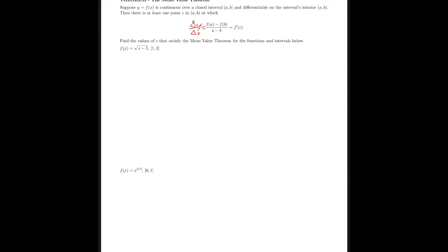The Mean Value Theorem builds on Rolle's Theorem. It states: suppose y = f(x) is continuous over [a, b] and differentiable on (a, b). Then there is at least one point c in (a, b) at which the average rate of change between a and b — that is, Δy/Δx — equals the instantaneous derivative f′(c). So the task is to find the value c that satisfies the Mean Value Theorem for the given interval.